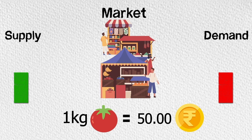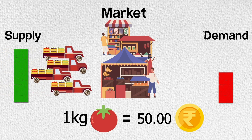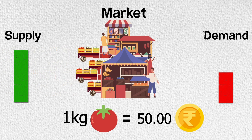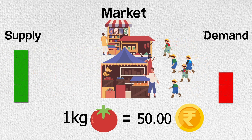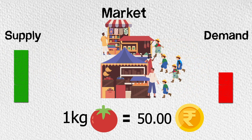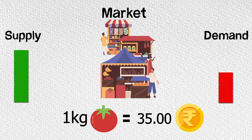The next day, a lot of tomatoes are harvested. So instead of 3, 4 lorries supply tomatoes to the market. Now we have the same 10 people but a lot of tomatoes, therefore we decrease the price. In other words, we have the same demand for an increased supply, hence the prices decrease.